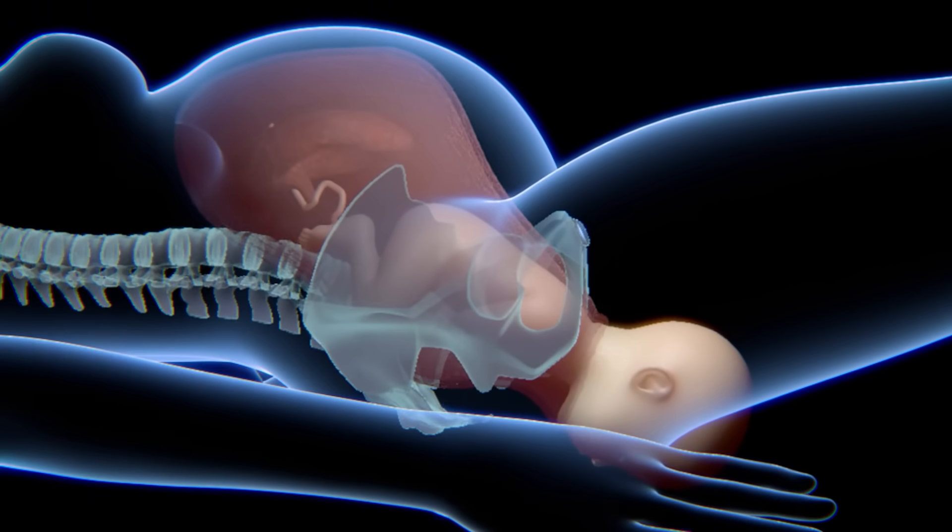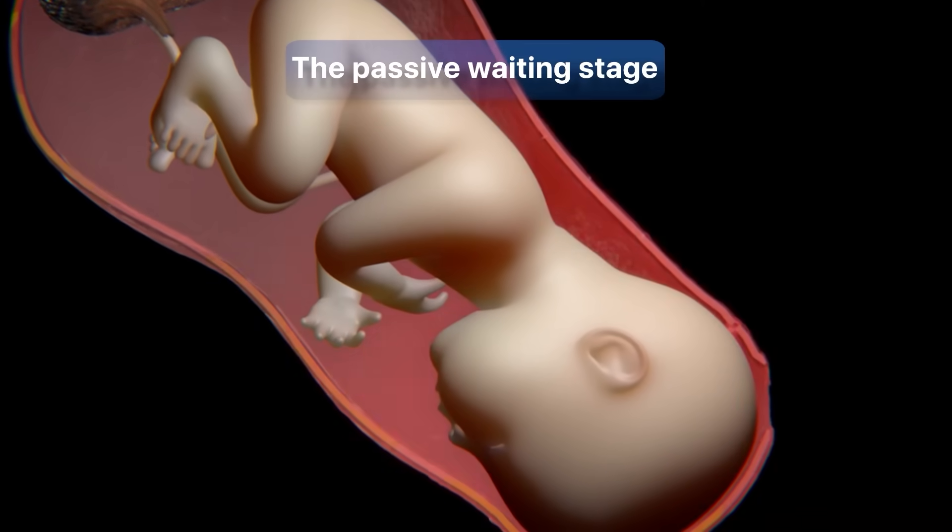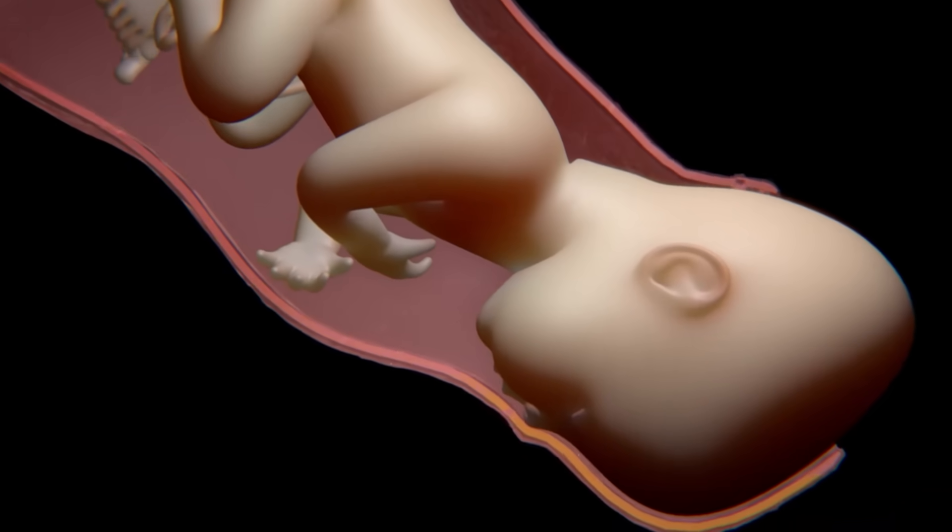In response to this, the passive waiting stage will begin, which causes the muscle of the uterus to remain relaxed and stretched to give the baby more room to pass through.